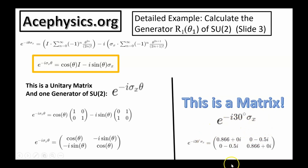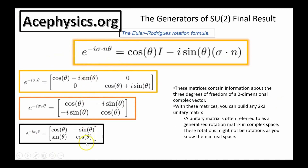In quantum mechanics, operators and matrices are often written in exponential form. The exponential of a matrix is just a unitary matrix, and the exponential form provides a compact and convenient way to express unitary transformations, which are fundamental in describing the evolution of quantum states. These three matrices are the generators of rotation for SU2, containing information about the three degrees of freedom of a two-dimensional complex vector, and with them you can build any 2-by-2 unitary matrix.